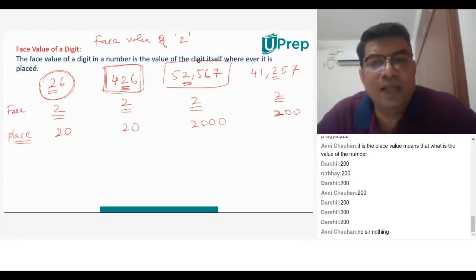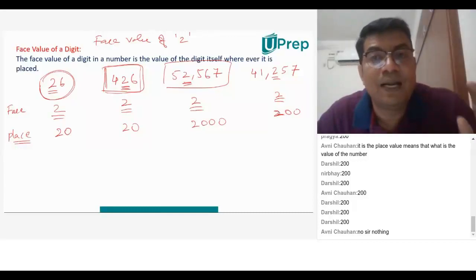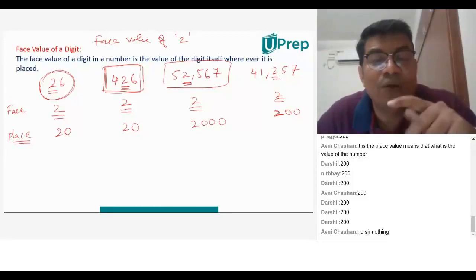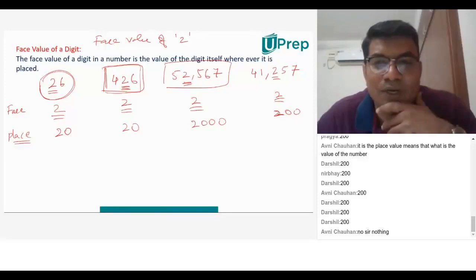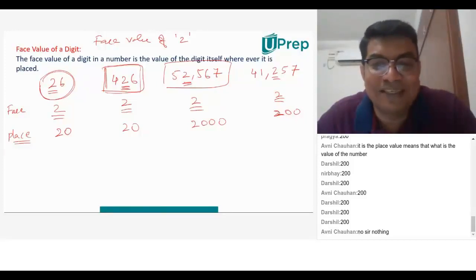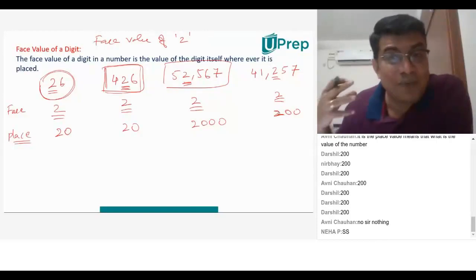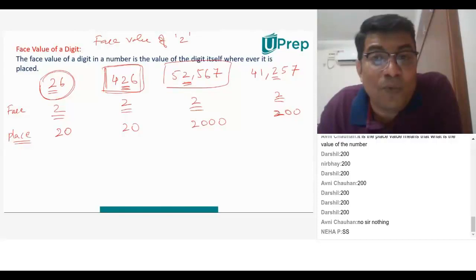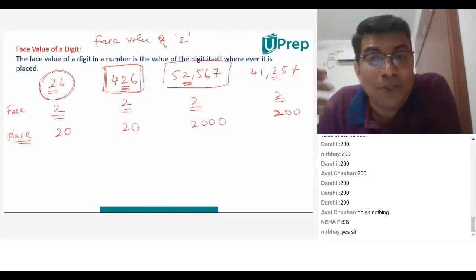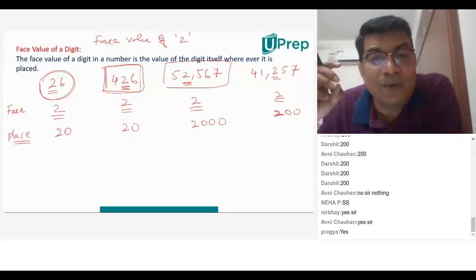So that is the difference between face value and place value. Face value doesn't change, but place value changes depending on the place. For example, consider a student — his name remains the same wherever he is, so his face value doesn't change. But his behavior changes: at school he's a student, at home he's a son, at the playground he's a friend. His behavioral role changes depending on which place he belongs to. Similarly, place value changes with position but face value never changes.